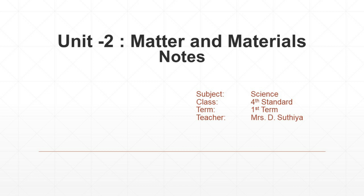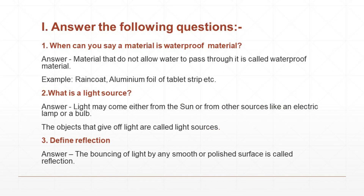Probe number 1. Answer the following questions. First one: when can you say a material is waterproof material? Answer: material that does not allow water to pass through it is called waterproof material. Example: raincoat, aluminium foil of tablet strip, etc.